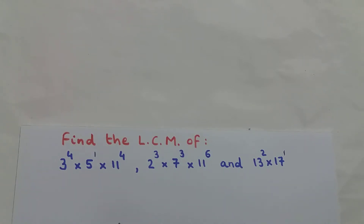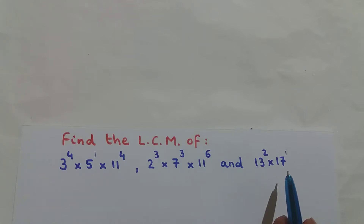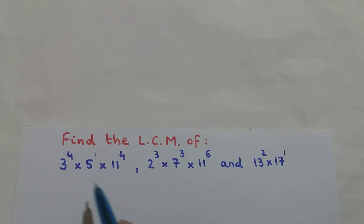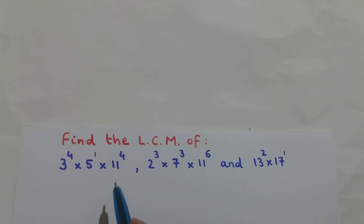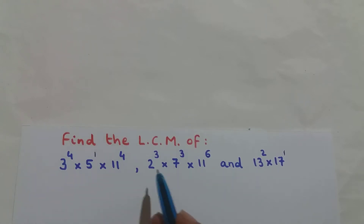Now write down all the different bases in the entire question. In this entire question there are 7 different bases. They are 3, 5, 11, 2, 7, 13, and 17. So I have 7 different bases in this entire question.